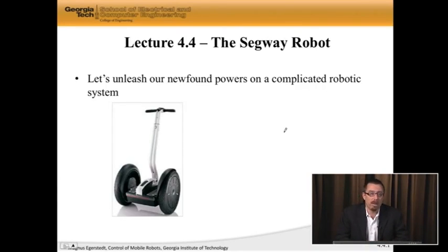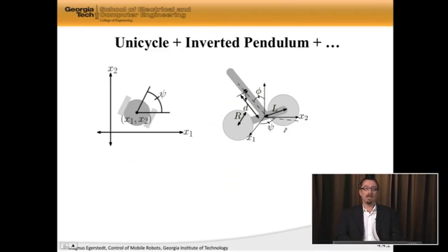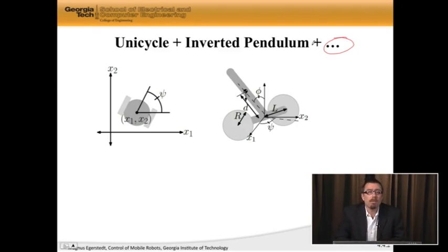This is a robot that's balancing on these two wheels. Here at Georgia Tech, we have a Segway robot known as the Golem Krang in Professor Mike Stillman's lab. Basically, the way a Segway robot works is that it's a unicycle, roughly a unicycle, on top of which there is an inverted pendulum. Luckily for us, we know how to model unicycles and inverted pendulums. I'm writing plus dot dot dot here because there's a little bit more going on. Basically, we're going to be moving while balancing this thing.